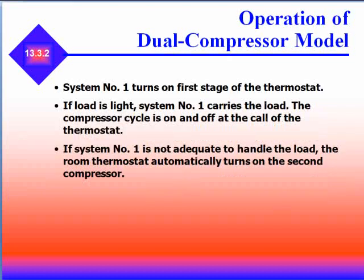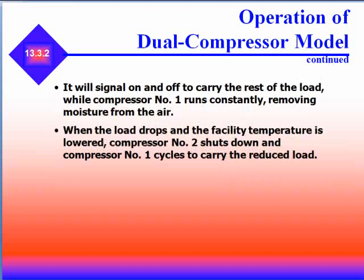The operation sequence works as follows: system number one turns on at the first-stage thermostat. If the load is light, system one carries the entire load, with the compressor cycling on and off at the call of the thermostat. If system number one is not adequate to handle the load, the room thermostat automatically turns on a second compressor. It will signal on and off to carry the rest of the load while compressor number one runs constantly, removing moisture from the air.